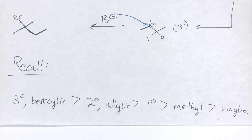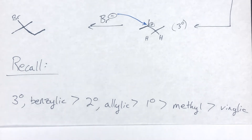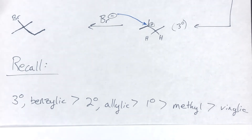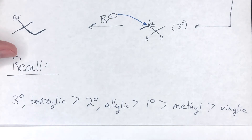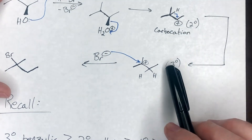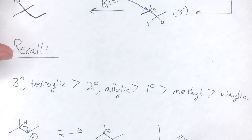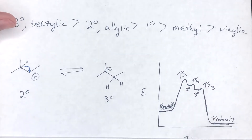Recall the stability order of carbocations: tertiary > secondary > primary > methyl, with benzylic and allylic being approximately equivalent to tertiary and secondary respectively. This is why the secondary position rearranges favorably to the tertiary. If you want to understand this fully, look at an energy diagram — it explains a lot about the driving force.